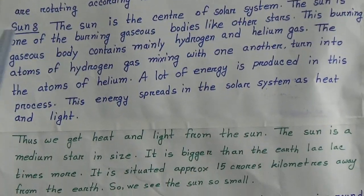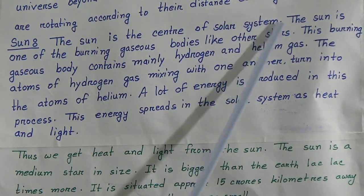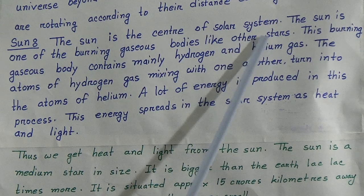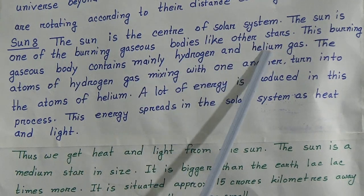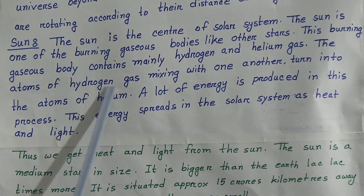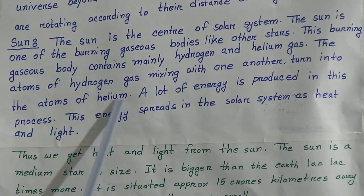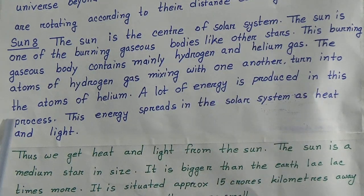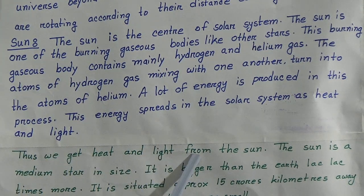What is the sun? The sun is the center of the solar system. The sun is one of the burning gaseous bodies like other stars. This burning gaseous body contains mainly hydrogen and helium gas. The atoms of hydrogen gas mixing with one another turn into the atoms of helium, and a lot of energy is produced in this process. This energy spreads in the solar system as heat and light.